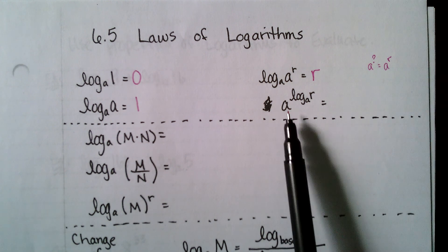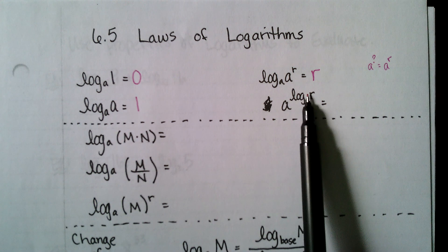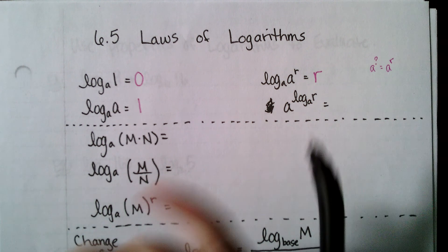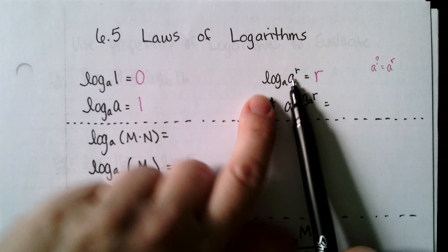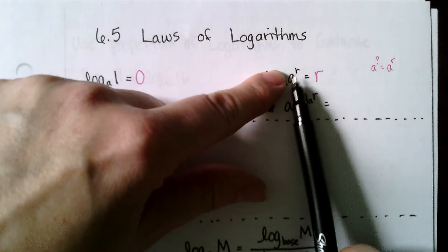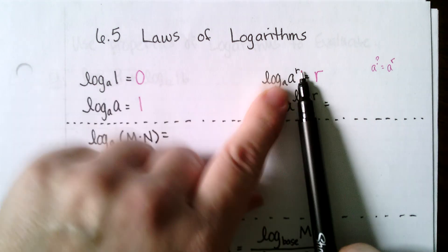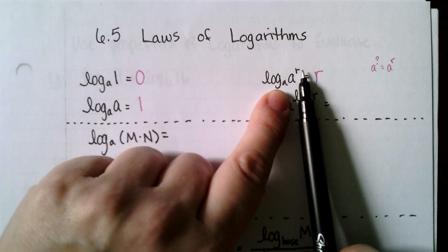This one is an exponent raised up to a log. What you want to think of is that logs and exponents undo each other. Starting closest to r, the first thing we're doing is taking a up to the r power, and then we're going to take log base a of what we get as a result.